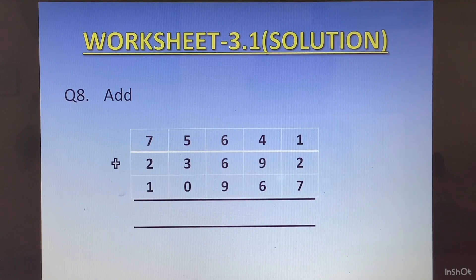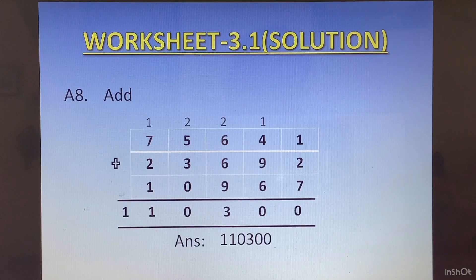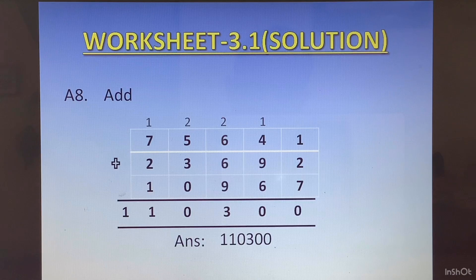Question 8: 75641 plus 23692 plus 10967 and the answer is 110300.